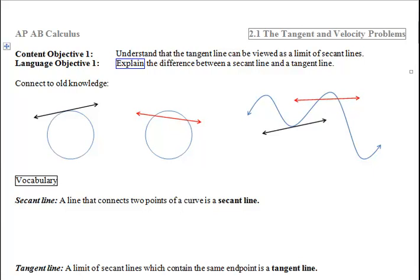This is section 2.1, the tangent and velocity problems, objective 1, which is to understand that the tangent line can be viewed as a limit of secant lines.